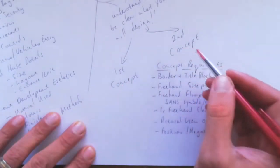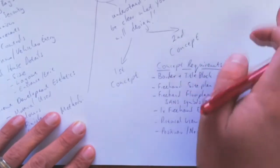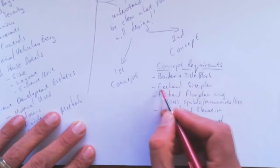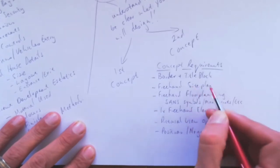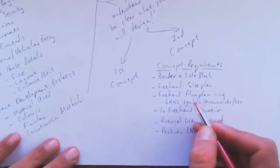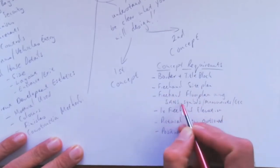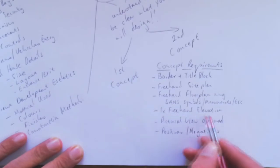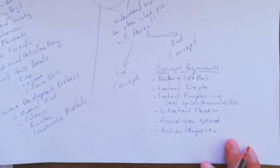You need to provide two concepts. Each concept must fulfill at least these requirements: a border and title block, all freehand. There will be a site plan to show the position of your gate, a freehand floor plan with sun symbols, measurements, etc. You'll have to do at least one freehand elevation to show the front view, and it's optional to do a pictorial view. Each concept must be evaluated with positives and negatives.